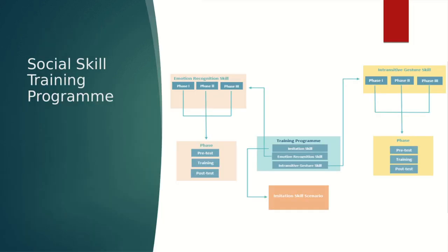The intransitive gesture training program is exactly the same as the emotion recognition training program, in which Phase 1 targets gesture recognition, Phase 2 targets gesture recognition and production through imitation, and Phase 3 targets recognizing and producing gesture in a social context.